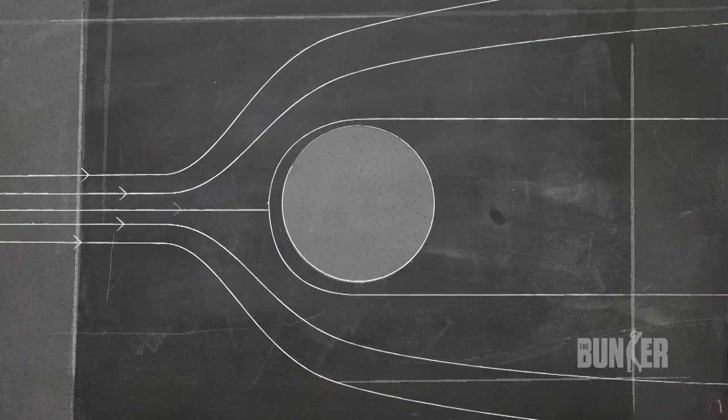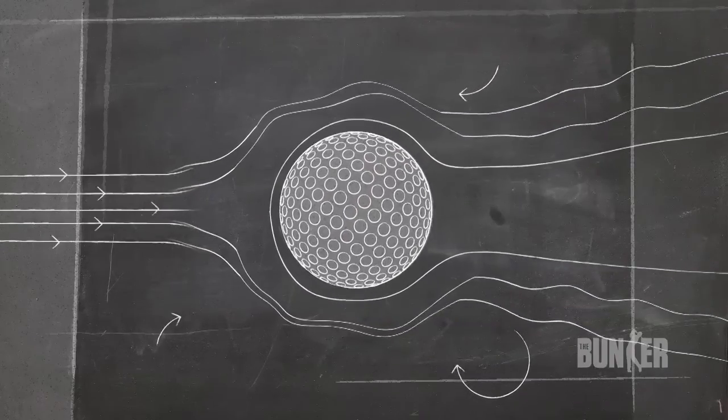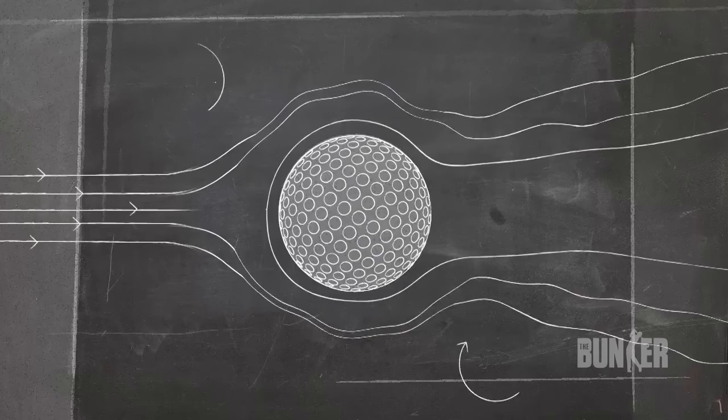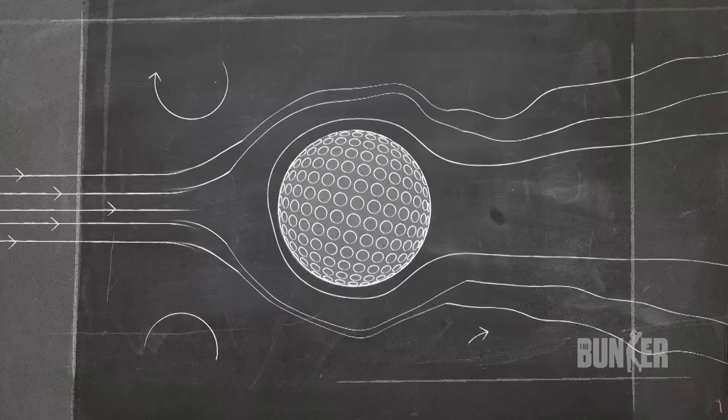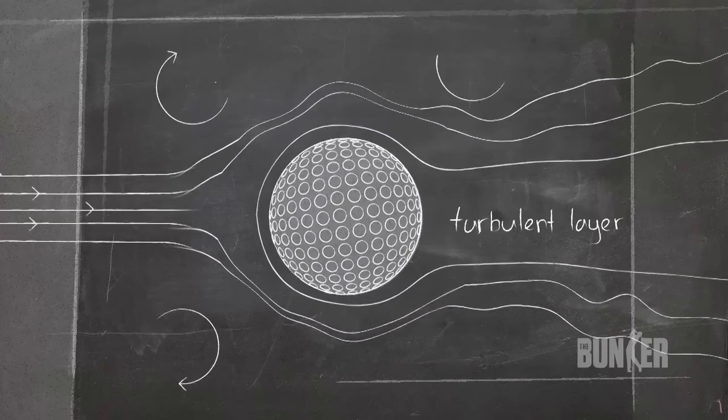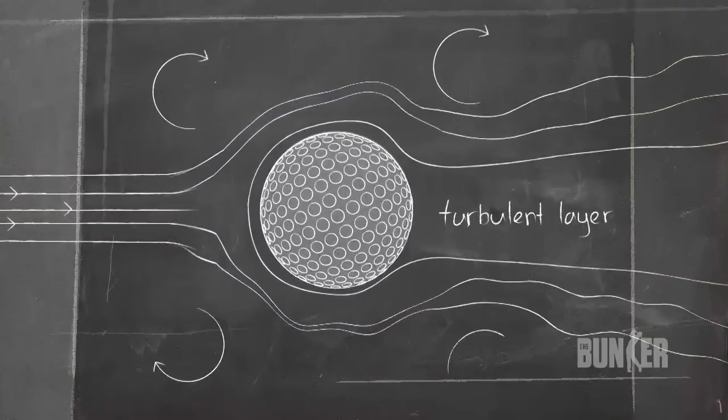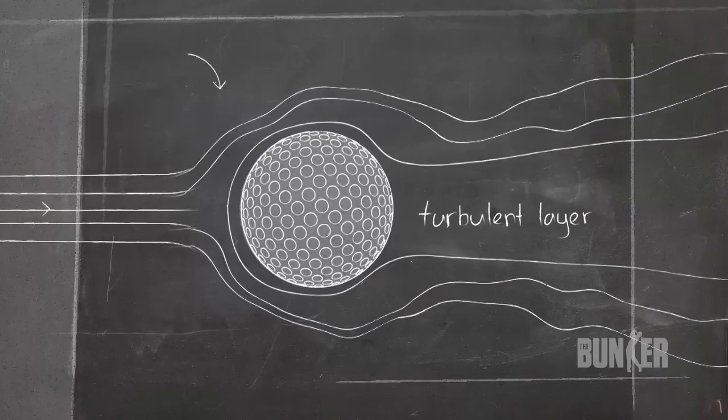And here's how the science works. Dimples create turbulence in the layer of air around the golf ball. The dimples scoop the air towards the back of the ball, and this turbulent layer remains attached to the surface, projecting it higher, further and faster.